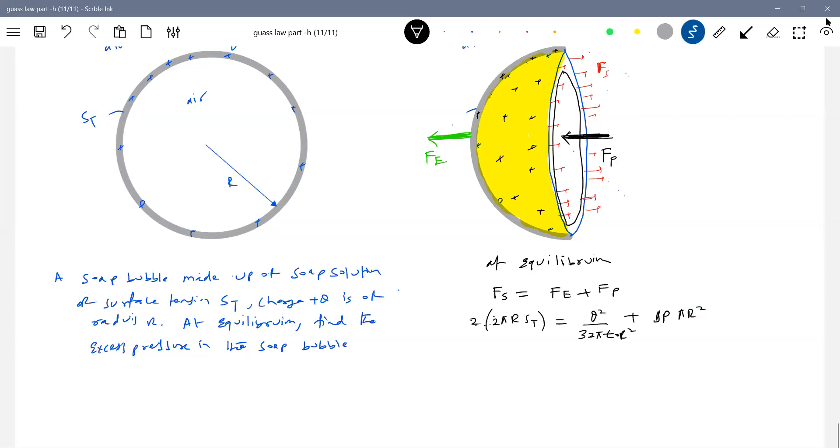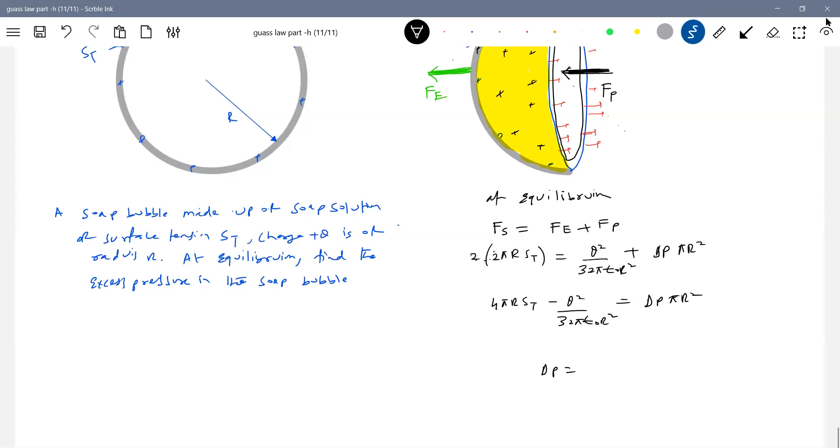He's asking this. Delta P excess pressure. So this will become 4 pi R ST minus Q square by 32 pi epsilon not R square equal to delta P pi R square.